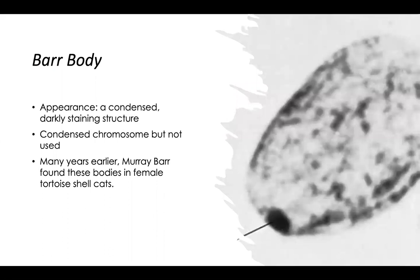So, what exactly does a Barr body look like? A Barr body looks like a condensed, dark, small circle on the end of a cell. The Barr body is super tiny — condensed chromosomes that still exist in the cell, but the chromosome does not get used.